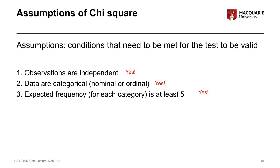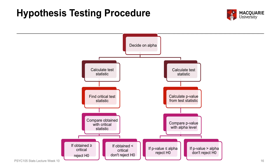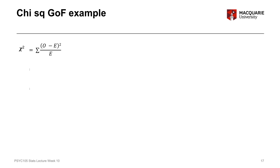Going back to our hypothesis testing procedure — this is the same process we follow regardless of what statistical test we're doing. First, we'll calculate the chi-square test statistic by hand, following the left-hand side of the flow chart. For our next chi-square test we'll use software. Normally you would do one or the other, not both — most real-world data analysis uses a computer program. The point of doing it by hand is so you have a better grasp of what the test is actually doing.